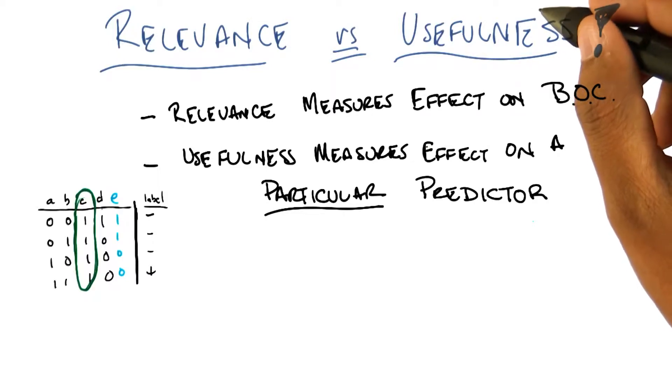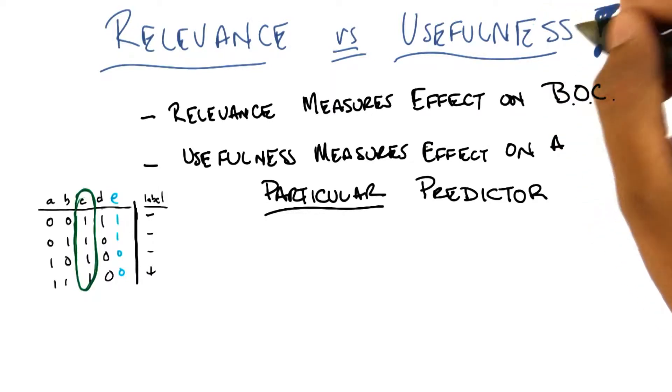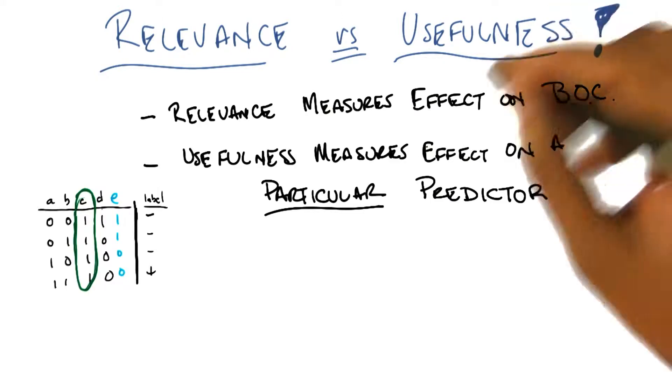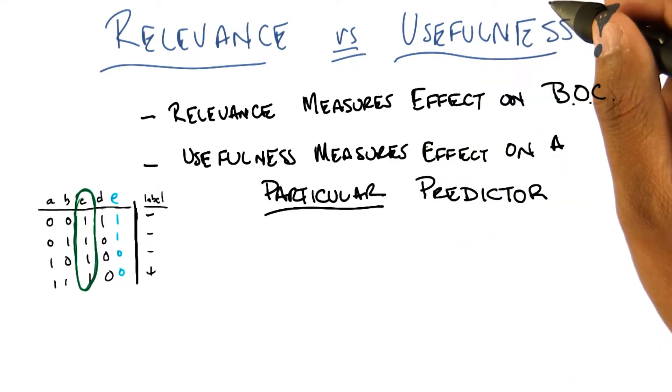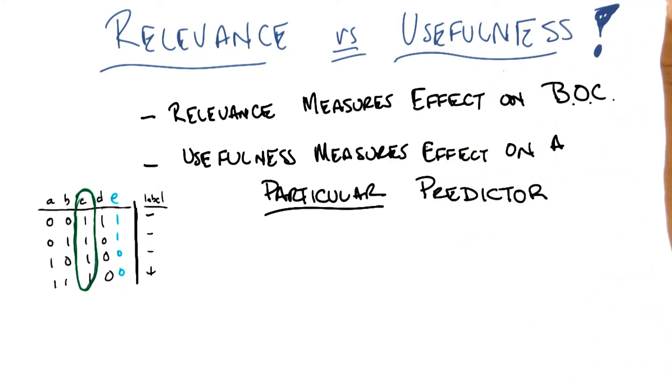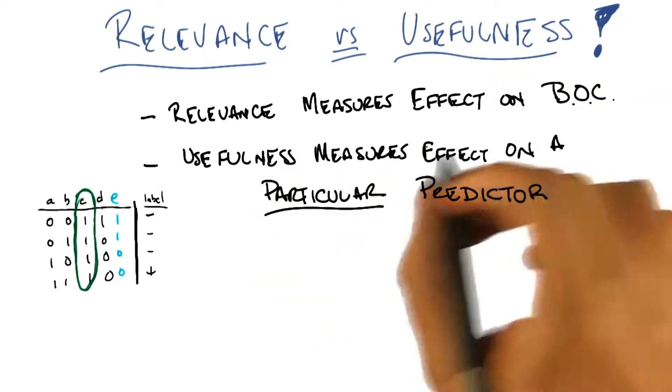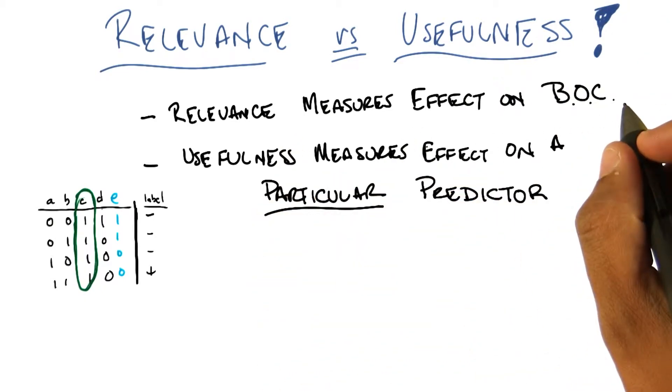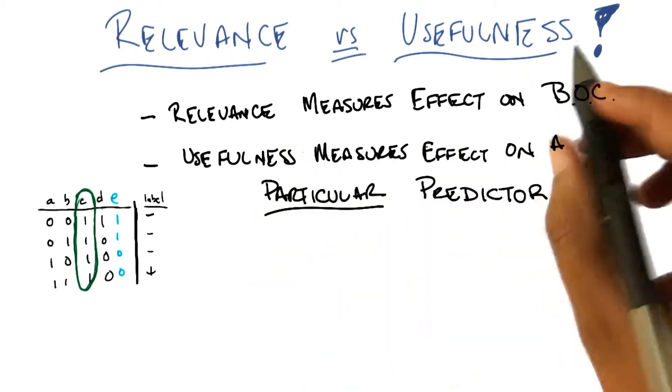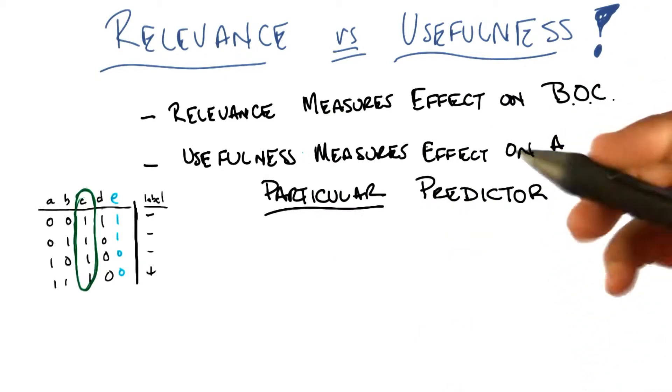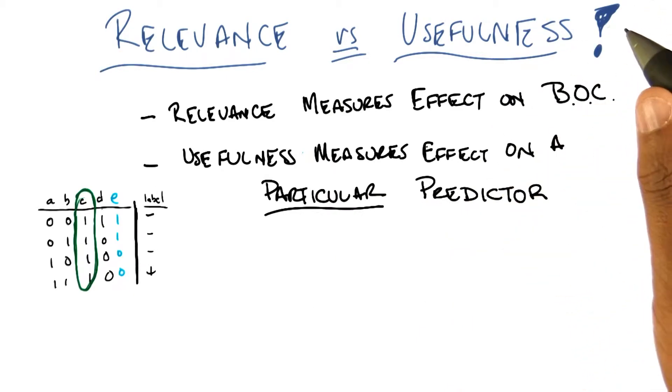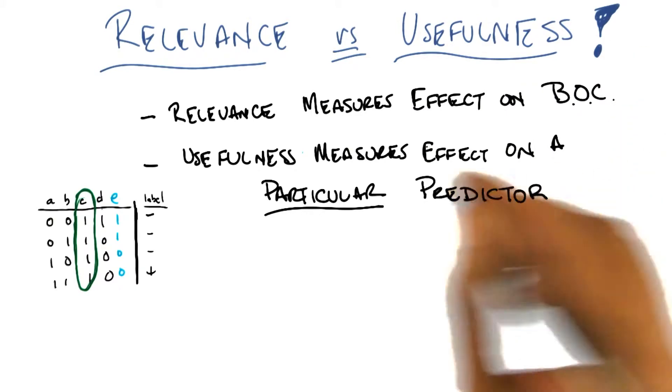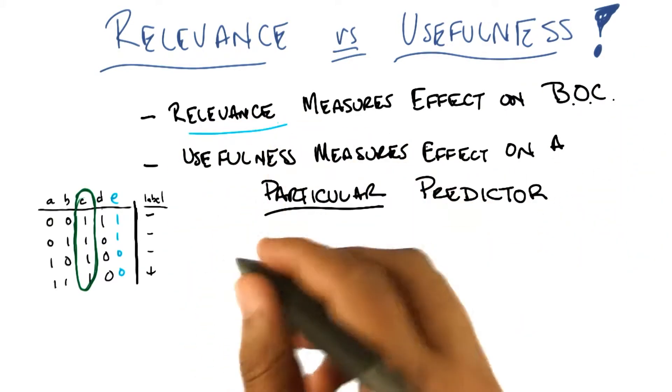So let's see if we can be a bit more formal about this notion of usefulness. Okay, so I erased all the stuff that I had before, but basically you could summarize that last slide as saying that relevance measures the effect on the Bayes Optimal Classifier. So a variable is relevant if it can make the Bayes Optimal Classifier's performance better or worse. So really relevance is about information.